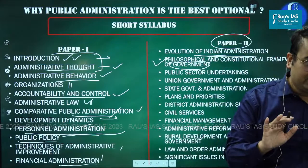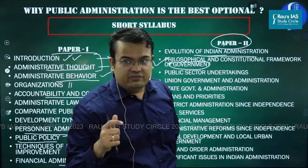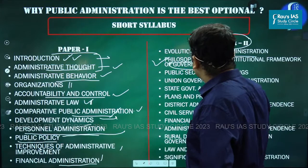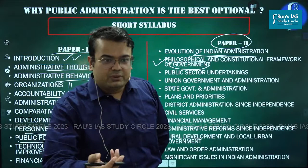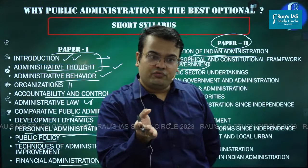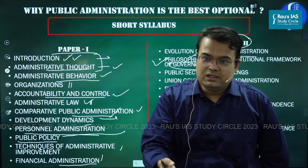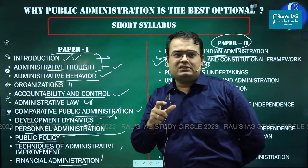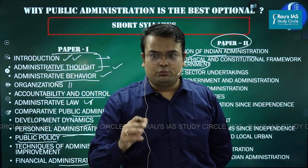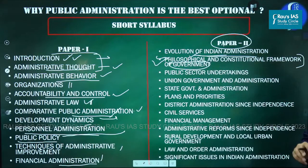Then there is the philosophical and constitutional framework of government. What exactly is the way in which the executive should function, implement laws, treat and interact with people? You need to understand what is liberty, what is equality, the Preamble, procedure established by law versus due process of law. This is important for polity but also for UPSC prelims — questions are asked about what the idea of creating a constitution is, what procedure established by law means. This topic covers the philosophical and moral underpinnings of how government is supposed to function.